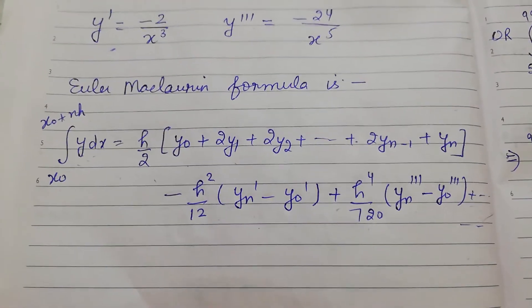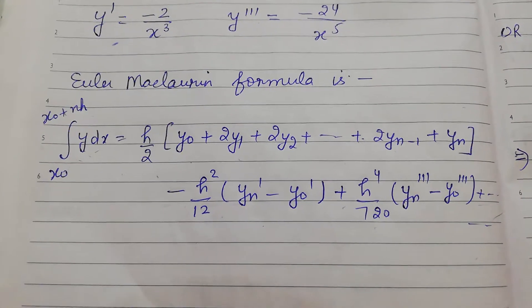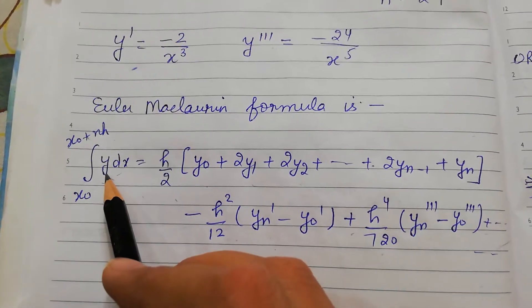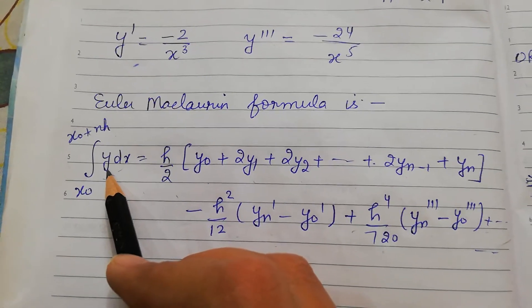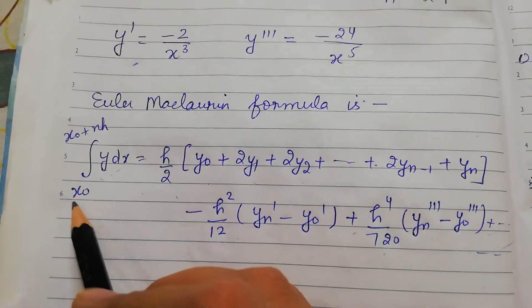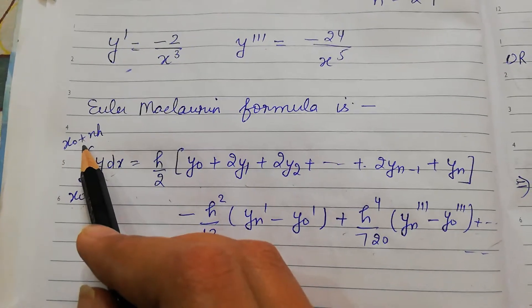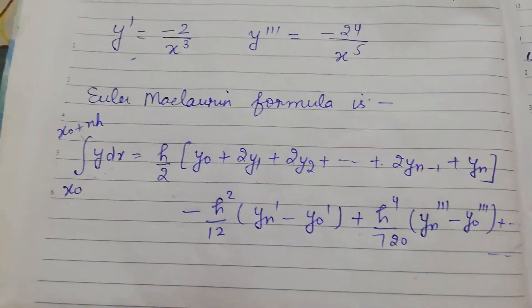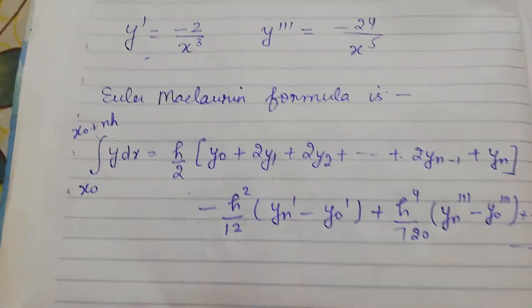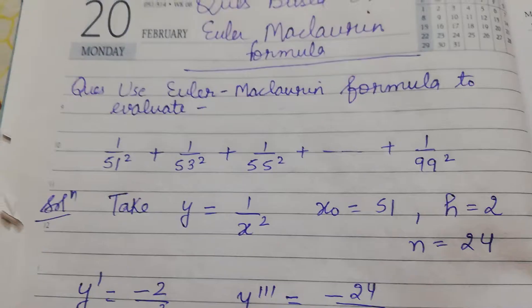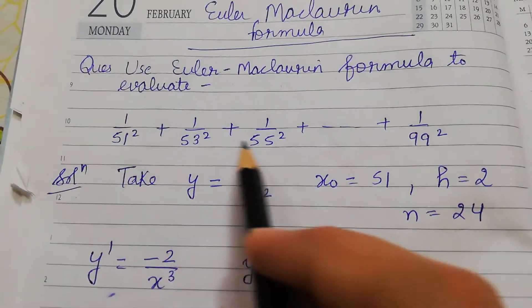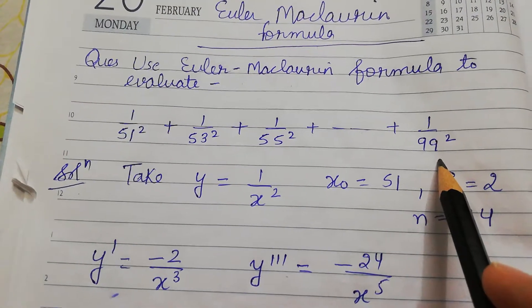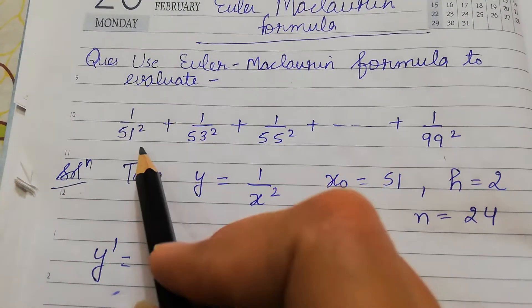In the previous question type we did with this Euler-McLaurin formula, a function y of x was given, along with lower and upper limits — you just apply the values and calculate the integration. But now in this case, the question is given as a series, so you have to identify first of all what your y is.